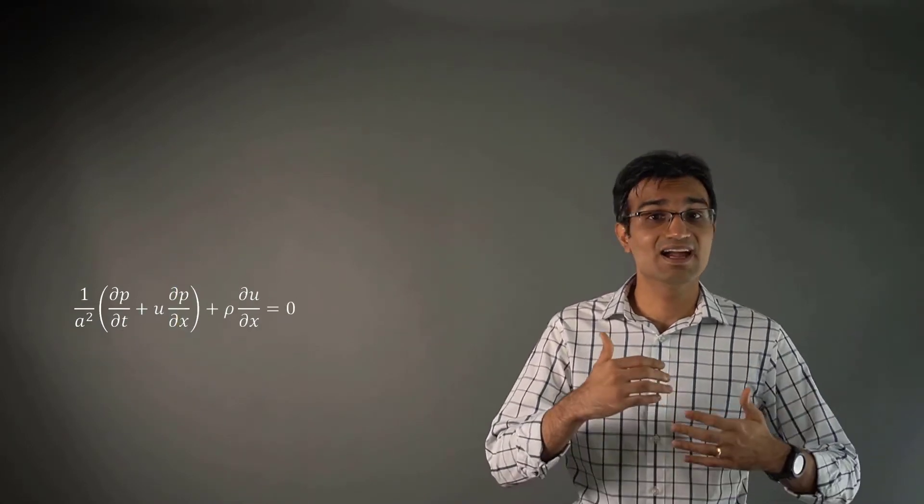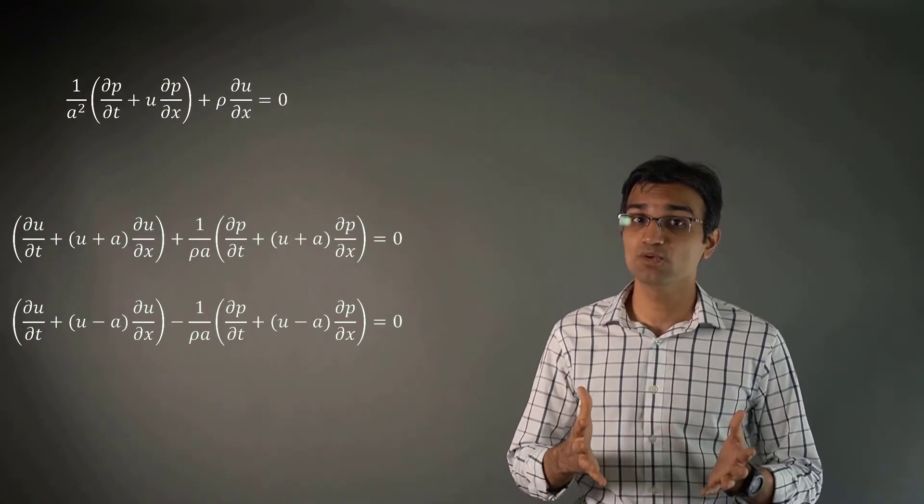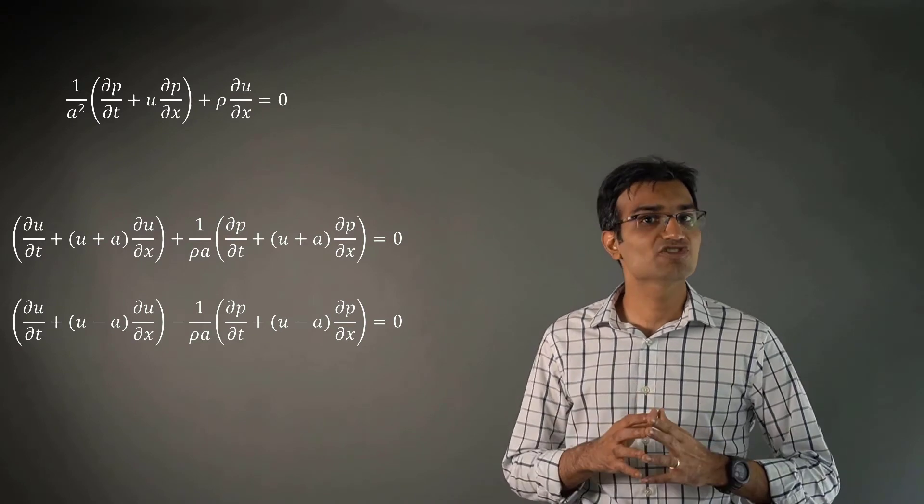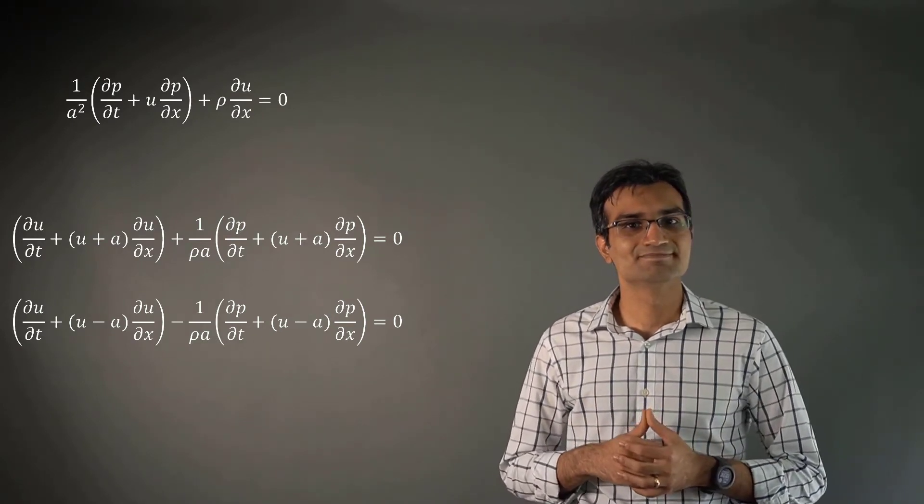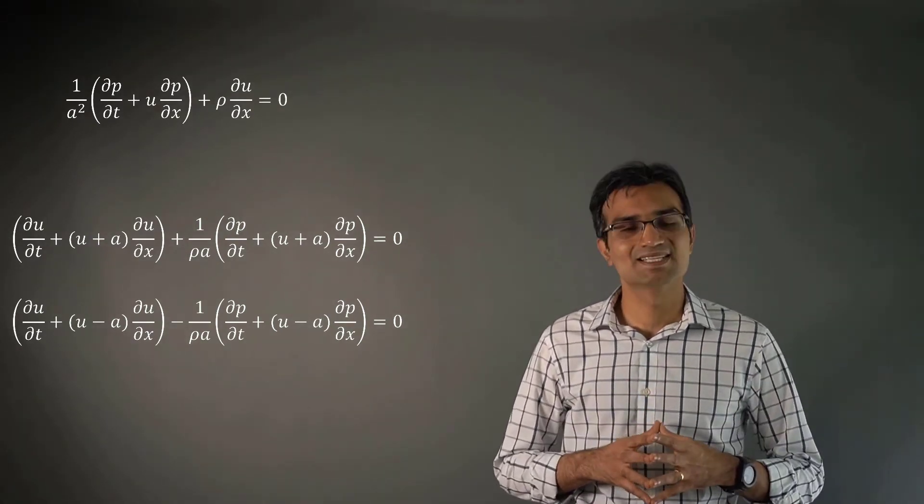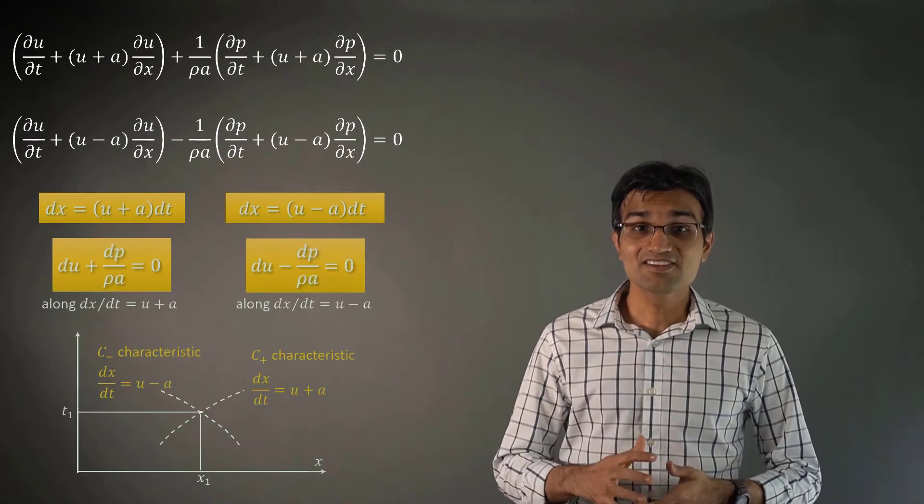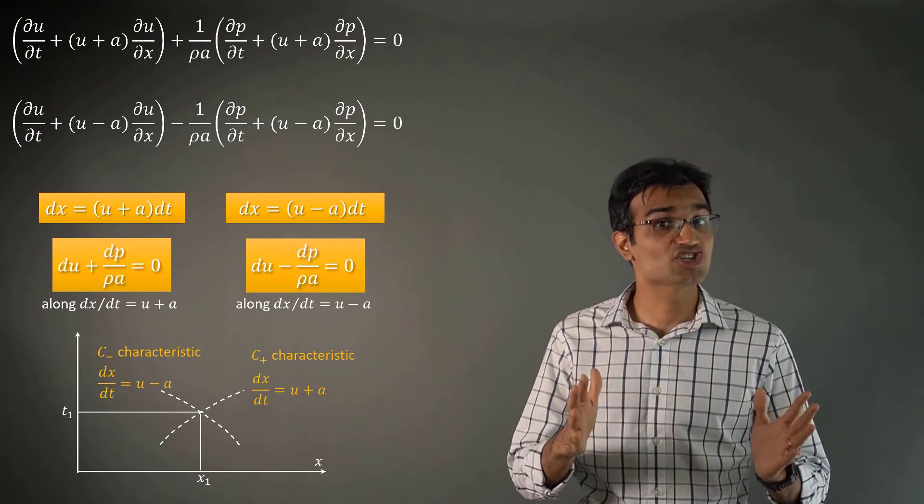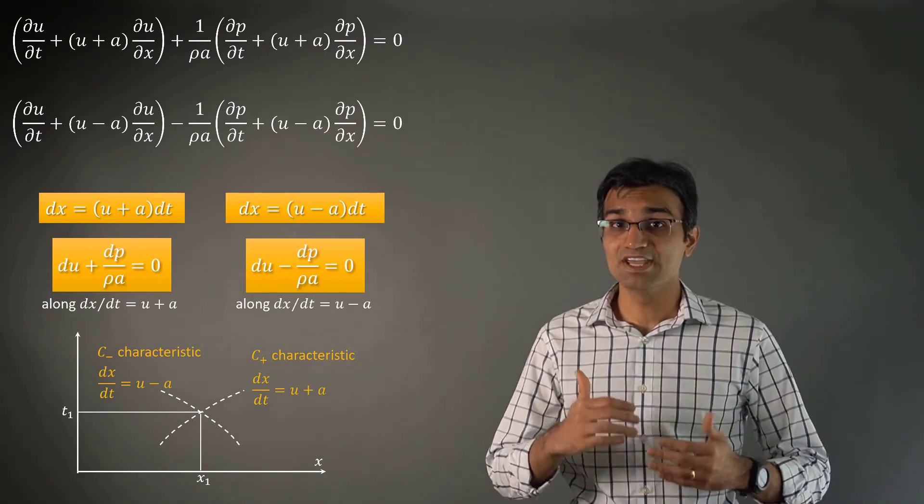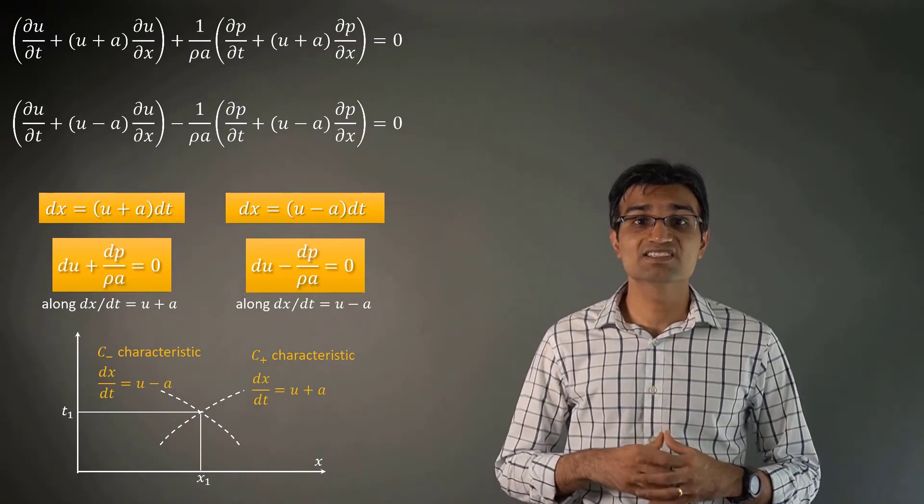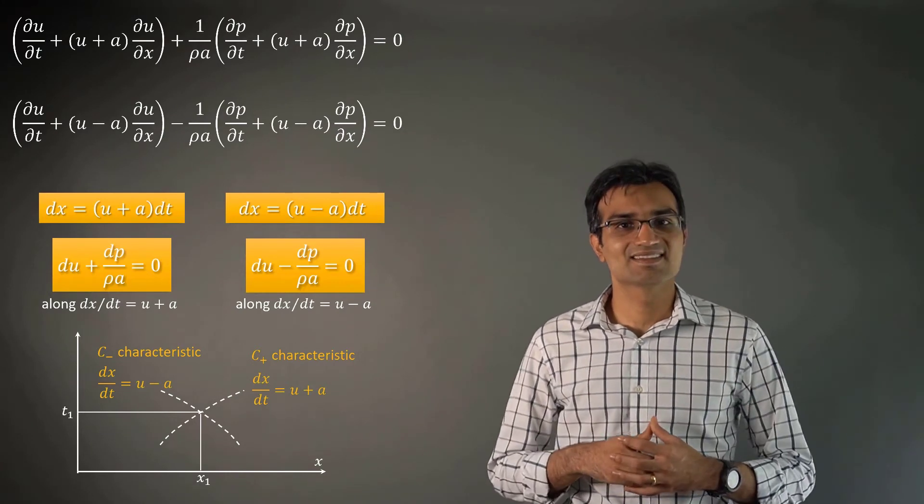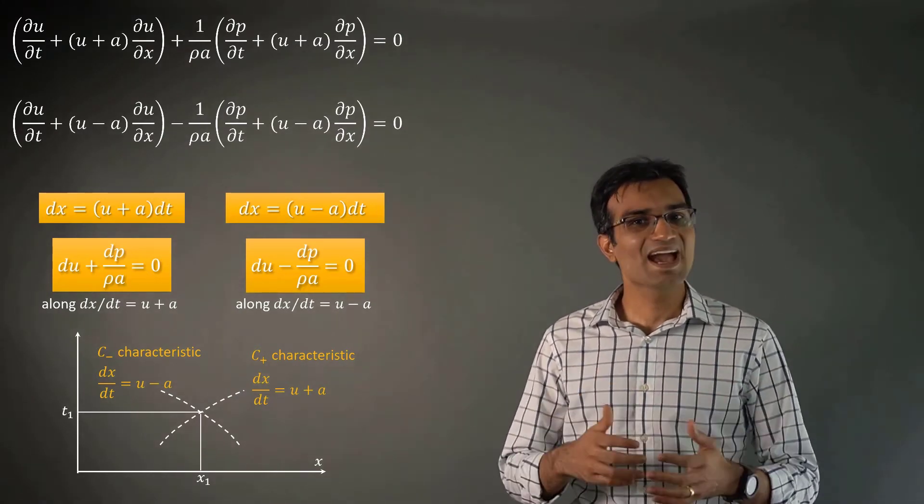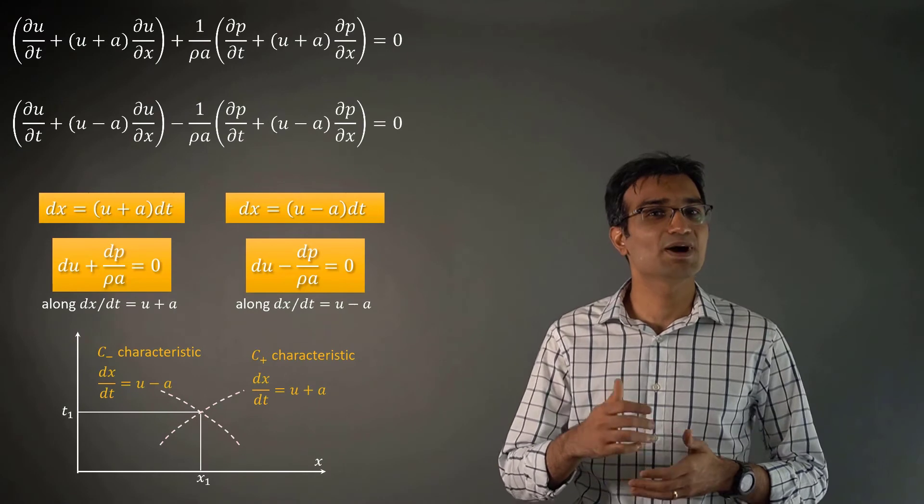Now, if we add and subtract this form of continuity equation from the one-dimensional momentum equation, we get these two equations. Considering these equations along two very specific lines in the XT plane as shown here, we obtain compatibility equations valid along these lines. You may ask, what's so special about these lines?